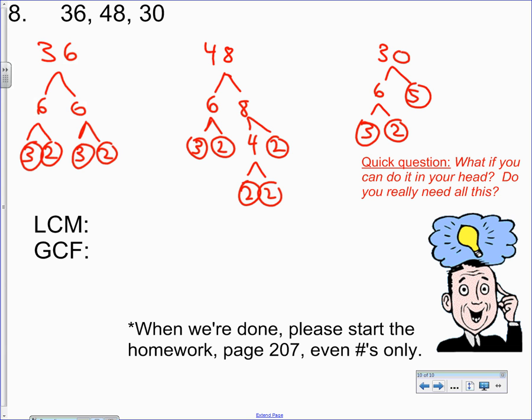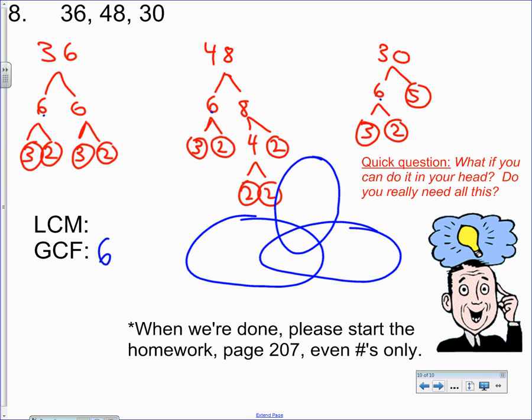Now, some of you might be able to look at this and say, hey, wait a minute. Six goes into all those numbers. I see it right here. There's a six here and there's a six here and there's a six here. So I think the GCF is six. Yeah, maybe it is. Let's check and see for sure. Venn diagram. Three-way Venn diagram.